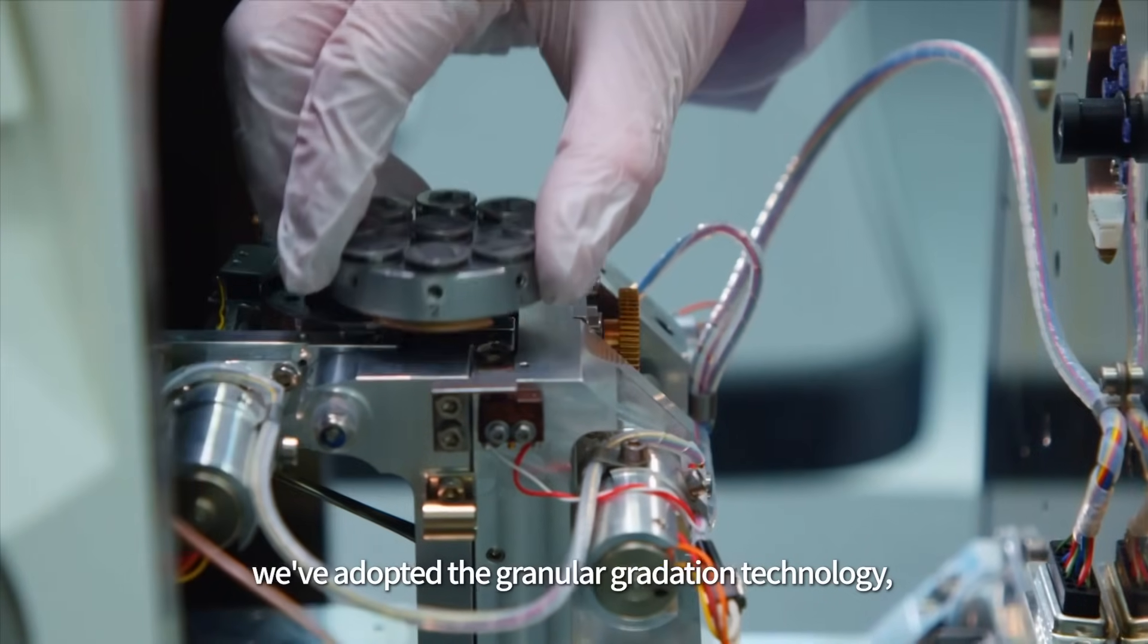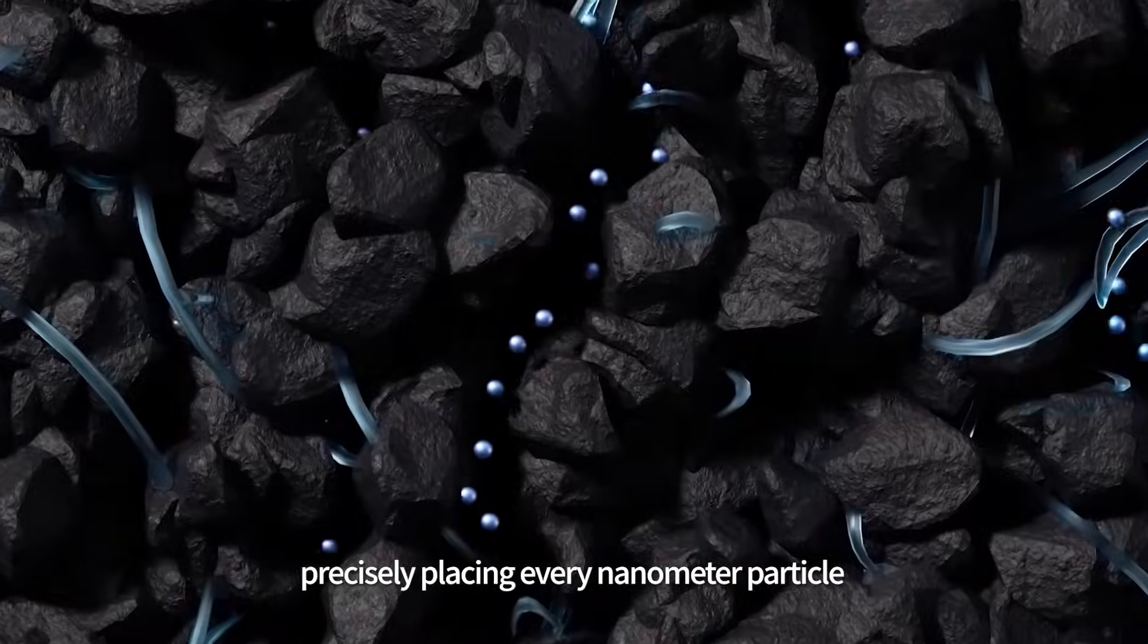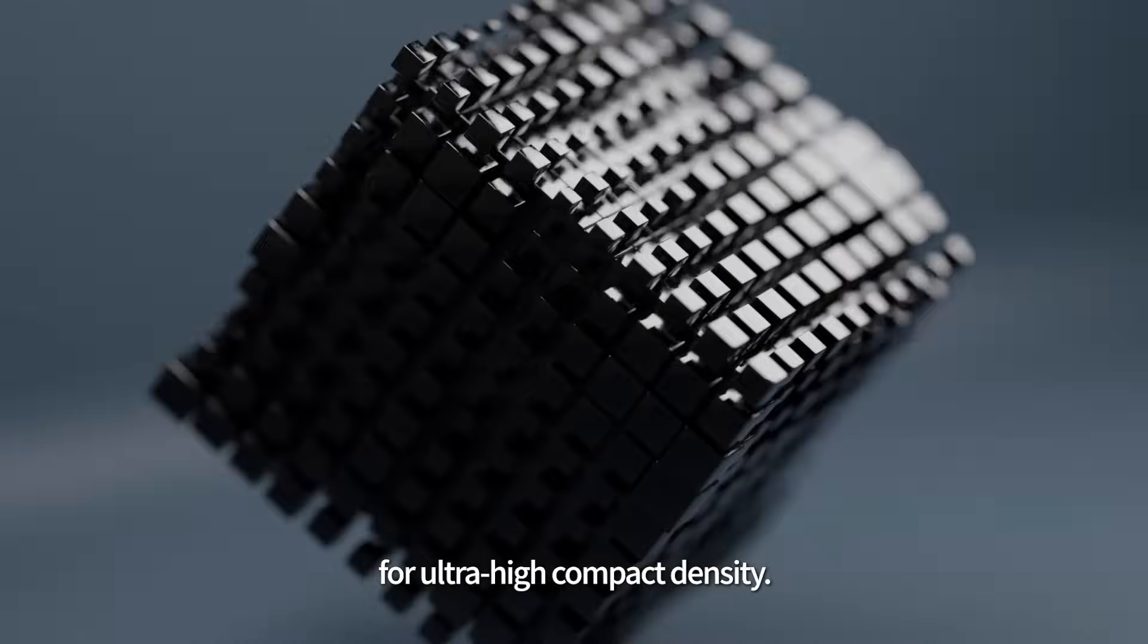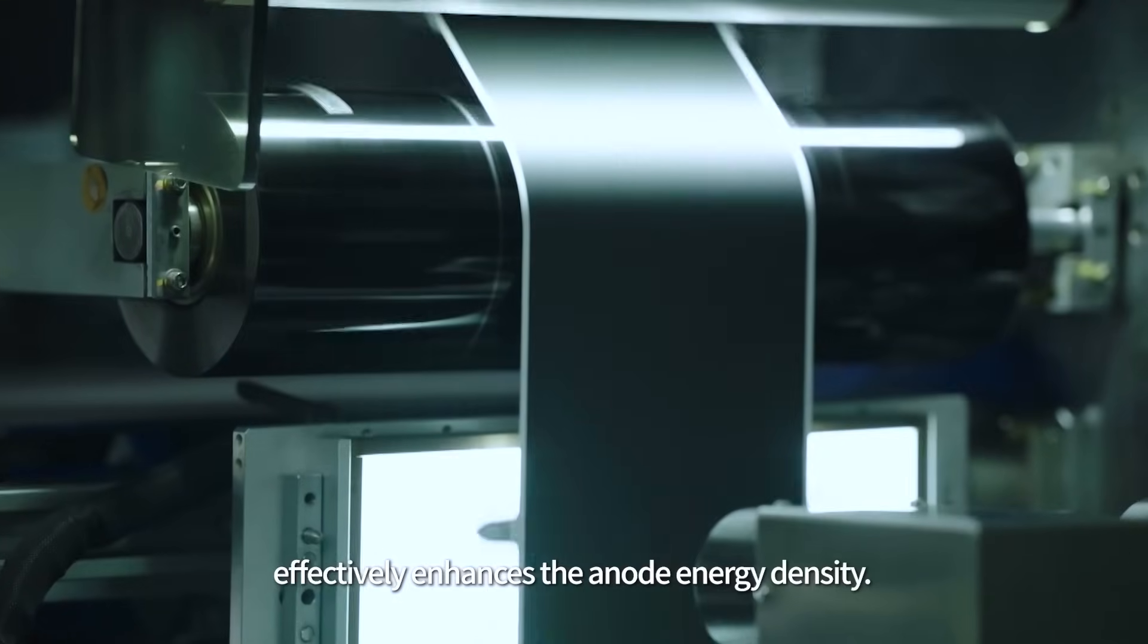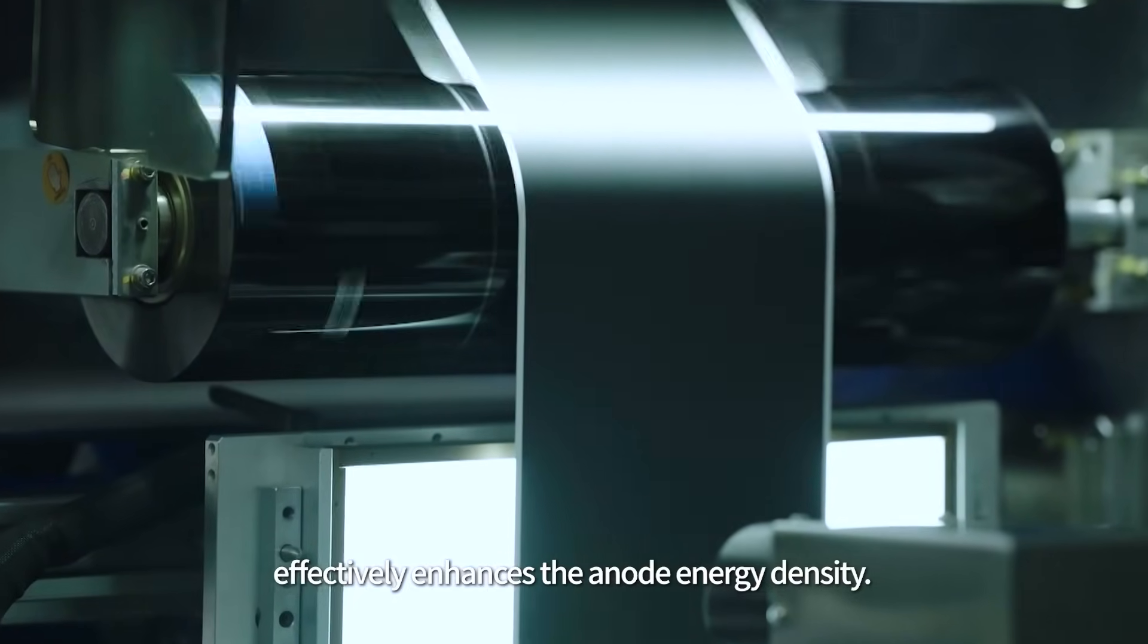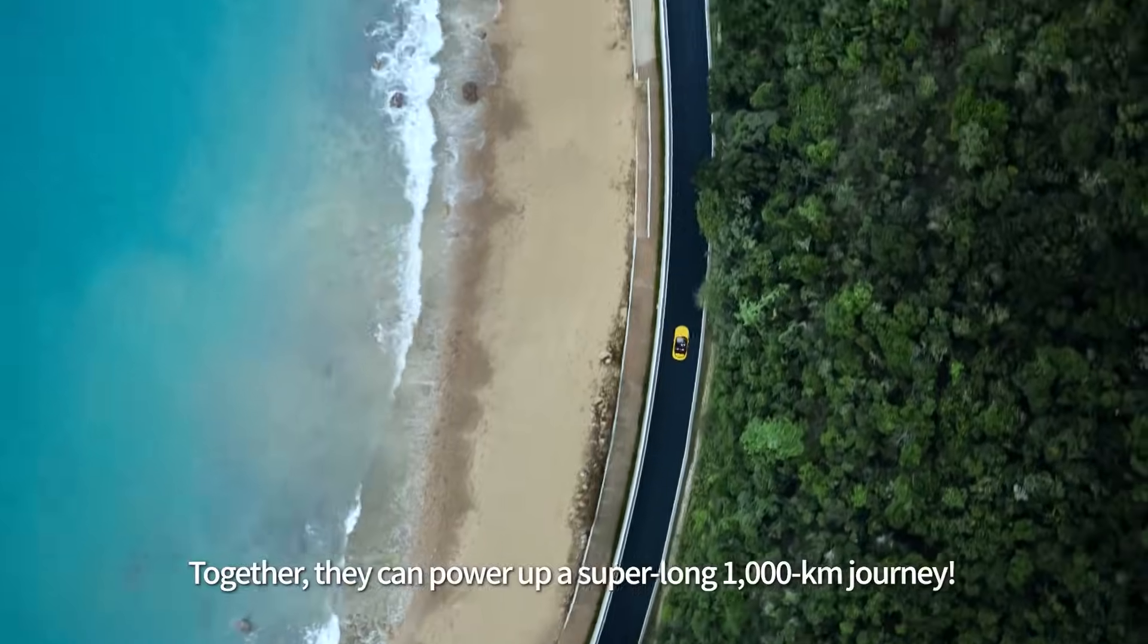For the cathode, we've adopted the granular gradation technology, precisely placing every nanometer particle for ultra-high compact density. And our proprietary 3D honeycomb-shaped material effectively enhances the anode energy density. Together, they can power up a super-long 1,000-kilometer journey.